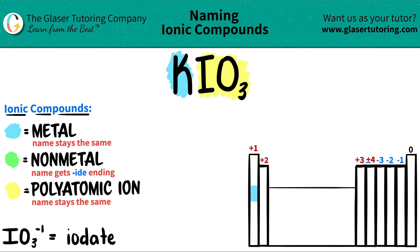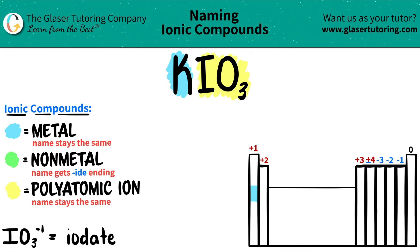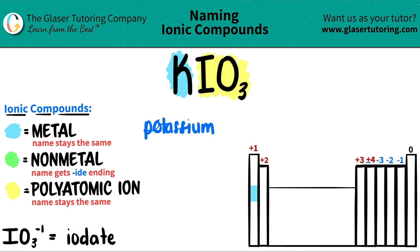Now let's name it out. The metal name will always stay exactly the same, so potassium will just stay potassium. The polyatomic ion name always stays the same as well — that's why you have to memorize them. IO₃ is iodate, so we just write iodate.